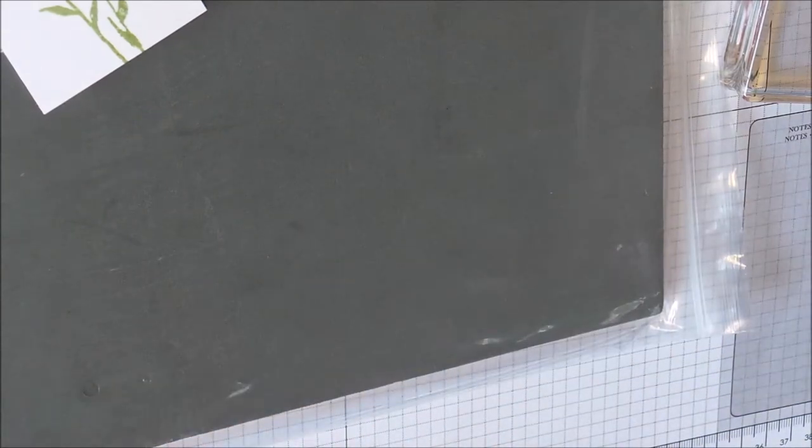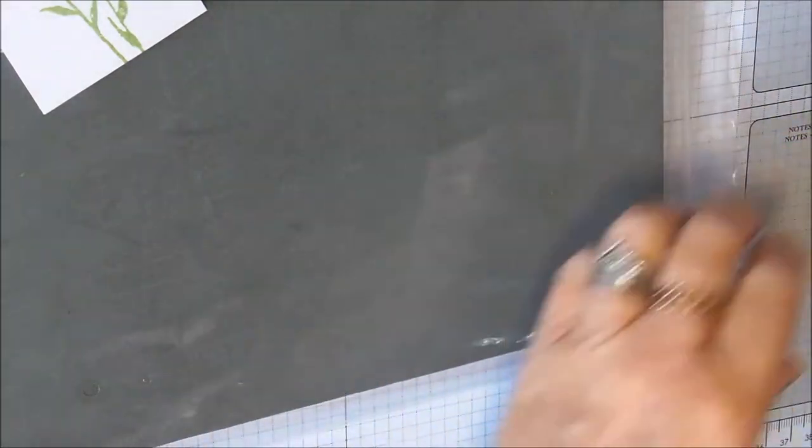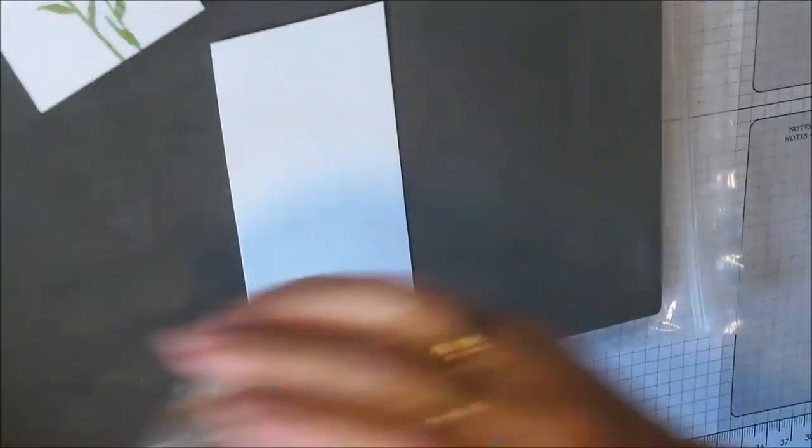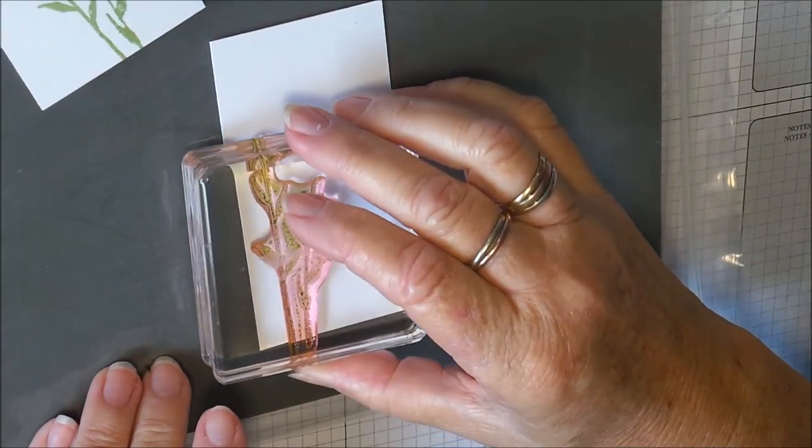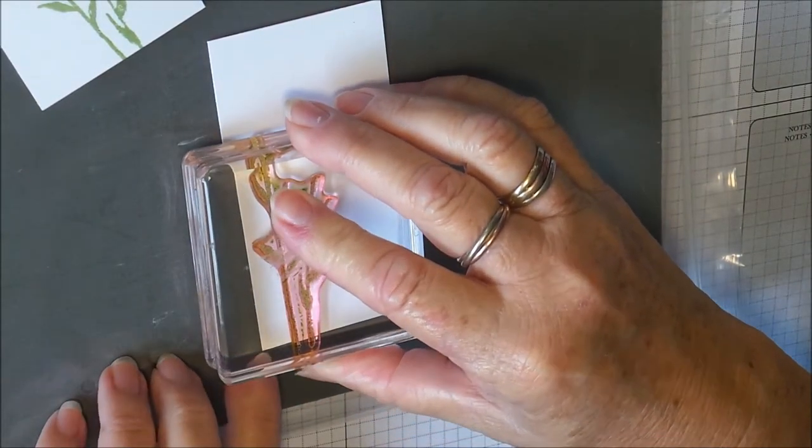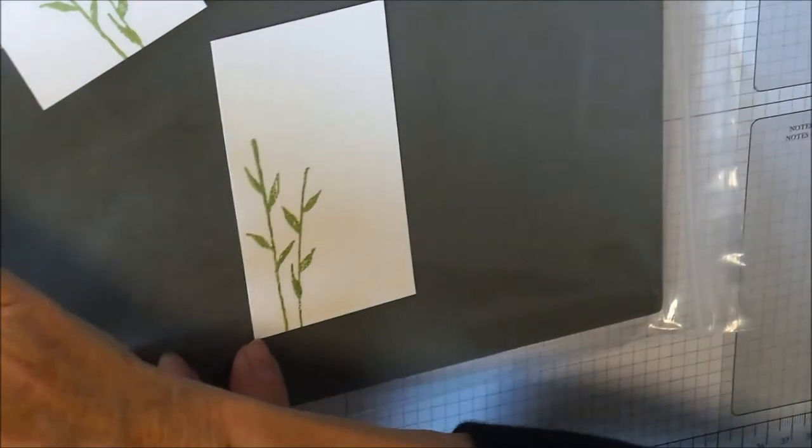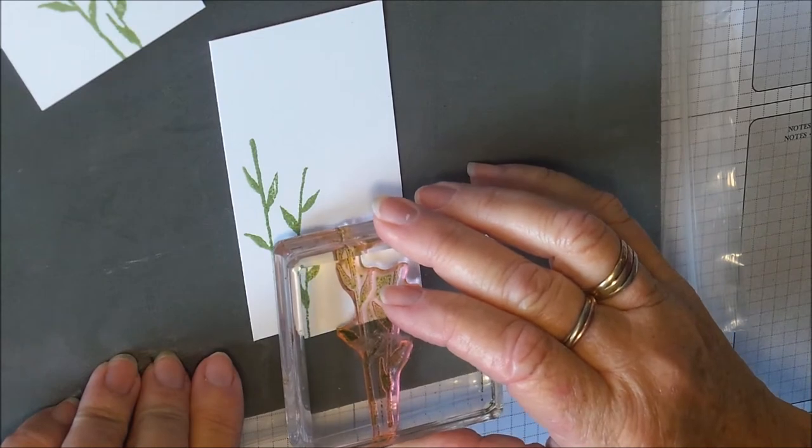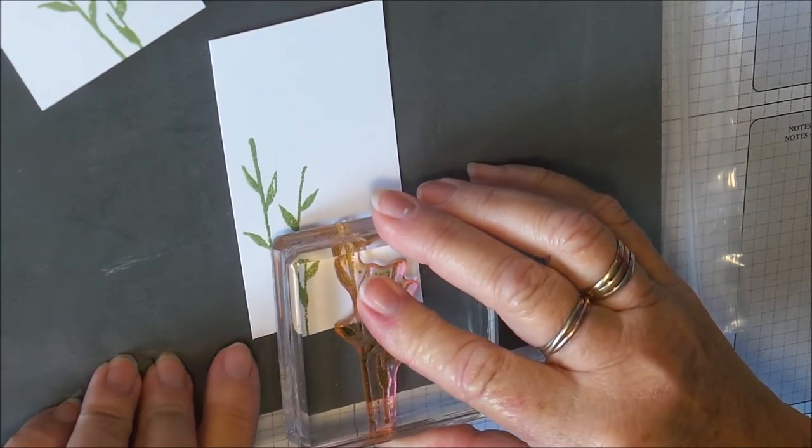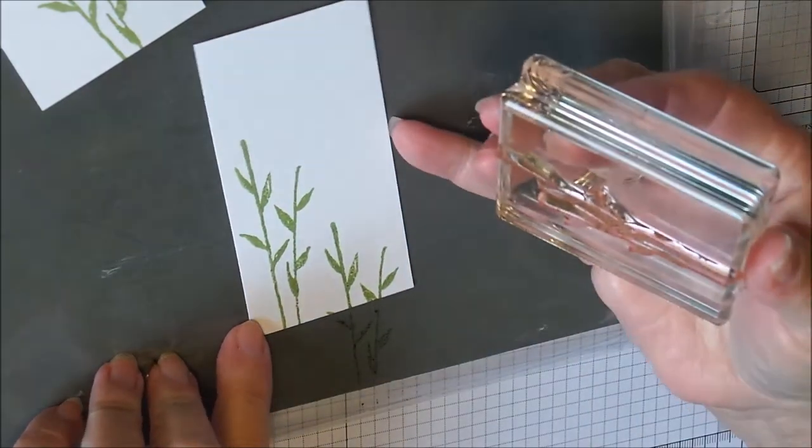Then I'm going to use that same leaf on two of the other panels, so I may as well get them stamped while I'm at it. This one I'm going to do here, and then another one just down here to make it look a bit like a garden, I suppose.